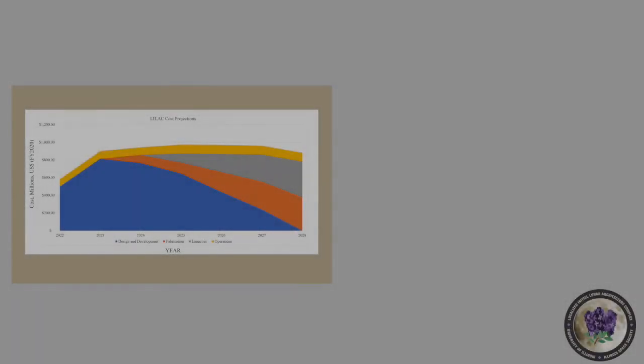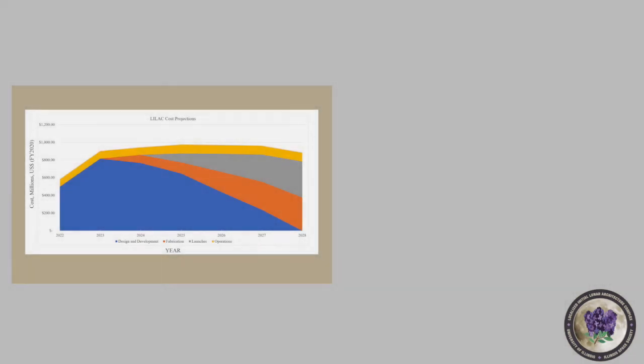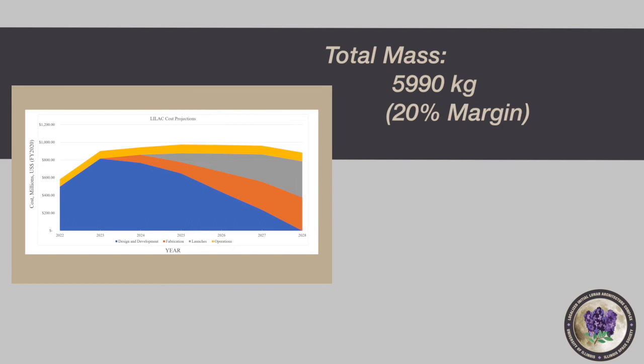Altogether, LILAC offers a robust and reusable solution to habitation for early exploration of the lunar south pole. At a total mass of just under 5,000 kg, or just under 6,000 kg with a 20% margin, the concept is well within the delivery capacities offered by near-future commercial landers.